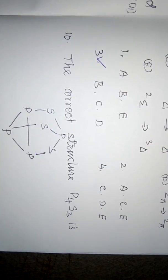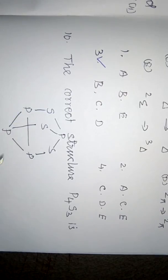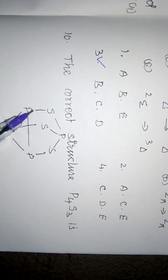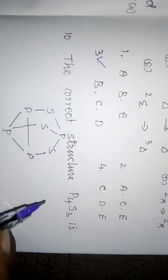In P4S3, there are 3 P-S-P bridges and 3 P-P bonds. Sometimes questions are asked based on the number of bonds: there are 3 P-S-P bonds and 3 P-P bonds.